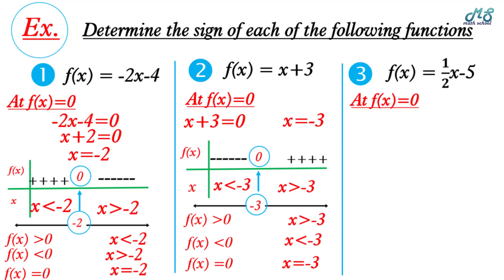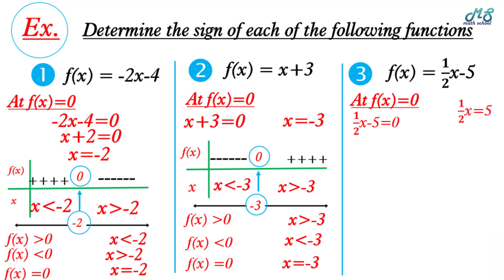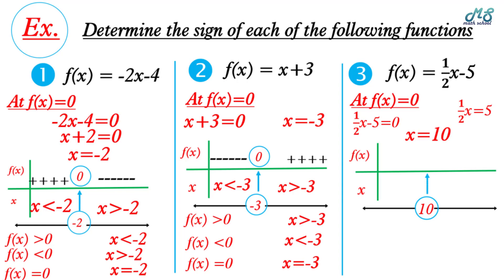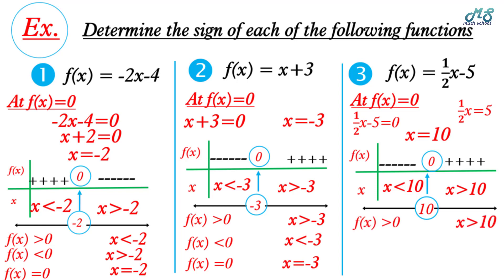Number three, f(x) = ½x - 5. Put f(x) = 0: ½x - 5 = 0, so ½x = 5, multiply both sides by 2, x = 10. At x = 10, f(x) = 0. At the right, x > 10, the sign is the same as the coefficient of x — positive. At the left, x < 10, it's the opposite — negative. So f(x) > 0 when x > 10, f(x) < 0 when x < 10, and f(x) = 0 at x = 10.